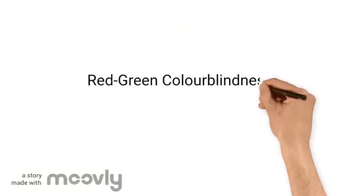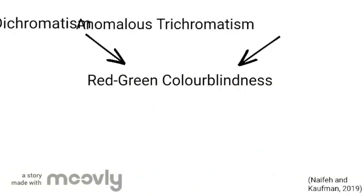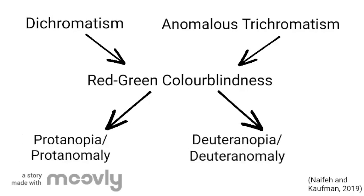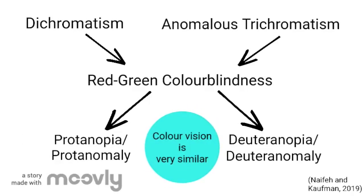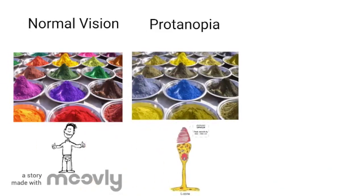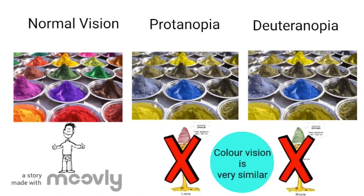Red-green colorblindness falls into the categories of dichromatism and anomalous trichromatism, and is scientifically referred to as protanopia/protanomaly and deuteranopia/deuteranomaly. Protanopia is the loss of red L cones, resulting in only green-blue color perception, and deuteranopia is the loss of green M cones, resulting in red-blue color perception.